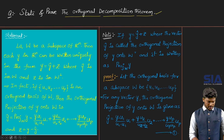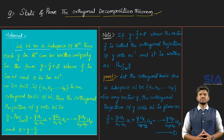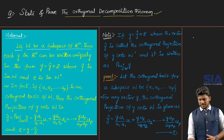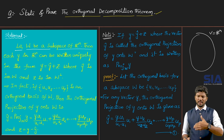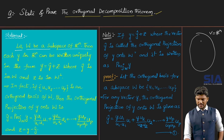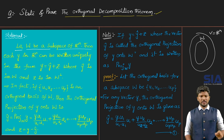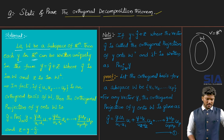First, observe the statement of the theorem. Let capital W be a subspace of R^n. So we have one vector space capital V, which we take as R^n — the Euclidean space of real numbers. V equals R^n is a vector space where n is greater than or equal to 1. In this vector space, there is a subspace capital W. Then, each small y in R^n can be written uniquely in a certain form.